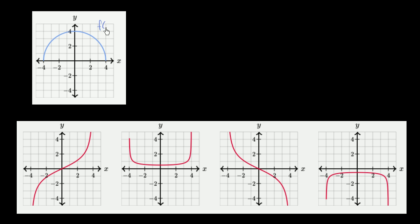I have a function f of x here, and I want to think about which of these curves could represent f prime of x, the derivative of f of x. To think about that, we just have to think about what the slope of the tangent line is doing at each point of f of x, and see if the value of these functions correspond to that slope.